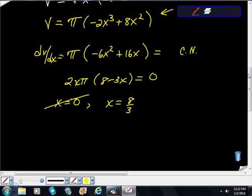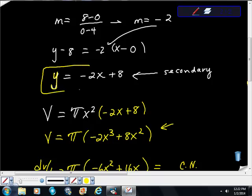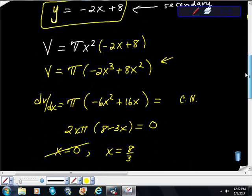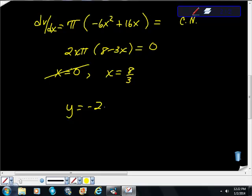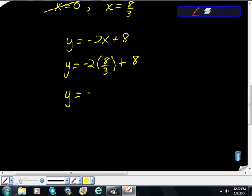Well, if x is equal to 8 thirds, go back up here. Remember, we have this is what y is. So y is equal to negative 2x plus 8. We said here that x is equal to 8 thirds. So we get y is equal to negative 2 times 8 thirds plus 8. Just a little bit more algebra here. y is equal to negative 16 thirds plus, right, if we multiply this by 3 over 3, we get 24 thirds. So 24 thirds here. y is equal to 8 thirds.